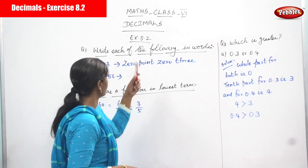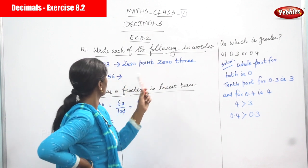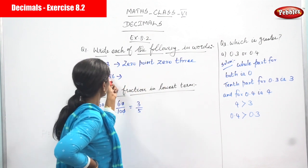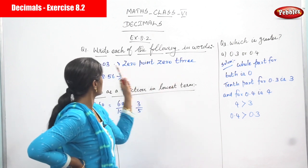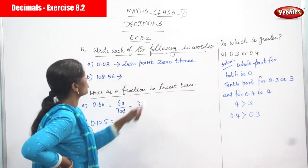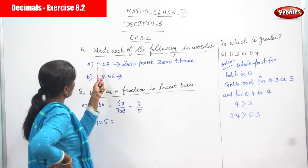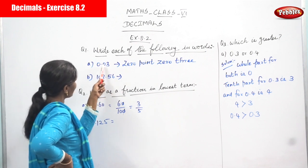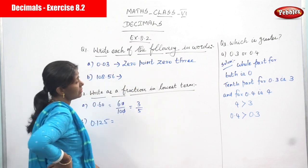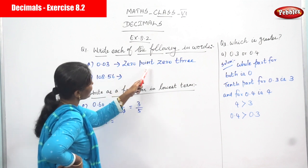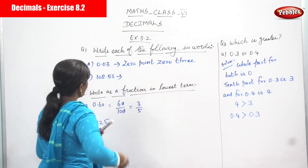Now we are going to see exercise 8.2: write each of the following in words. First, 0.03. So you have to write 0.03 in words — that is what I have written in words.